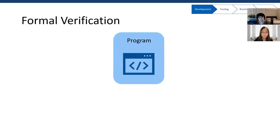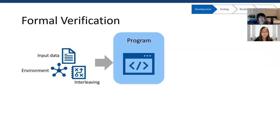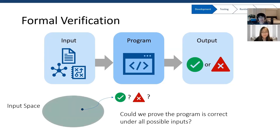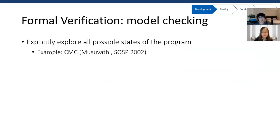Besides static checking, another option at the development stage is formal verification. Given a program, at runtime its behavior is determined by its input data, the environment that may affect the program, and the order between events, which we call interleaving. We can treat all of these as input. Given a specific input, we look at the program's behavior — the behavior can be correct or incorrect based on a specification. If we have a way to say that the program is correct with all possible inputs with regard to a correctness specification, we call this formal verification. The first way to do formal verification is model checking, which means we treat the program as a state machine and iterate through all possible states to make sure the program behaves correctly.